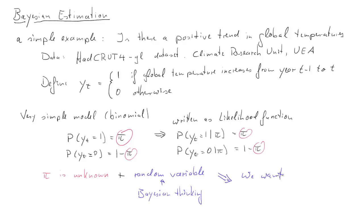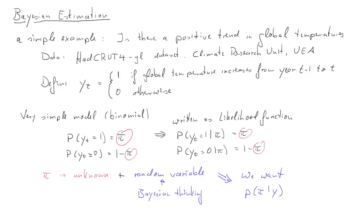Frequentists wouldn't look at it as a random variable. And what we want is the distribution of pi conditional on Y, the data. In order to find it, we will use the following very basic probability relationships. The probability of pi conditional on Y is equal to the probability of Y conditional on pi times the probability of pi divided by the probability of Y.